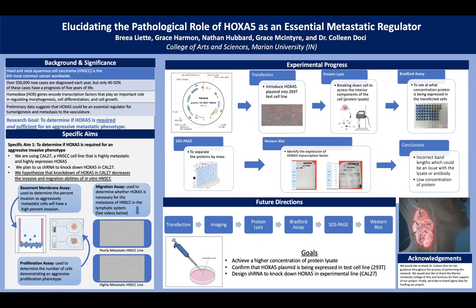As you can see, there are three different assays shown in the specific aims box. The first assay is the basement membrane assay, which we will perform to determine the percent of invasion. An additional assay is the proliferation assay, to find the number of cells with an aggressive proliferation phenotype. The third assay is the migration assay, used to determine if HoxA5 is necessary for metastasis.